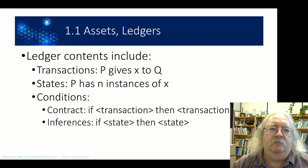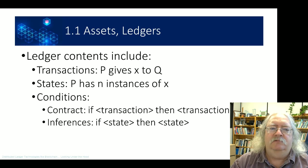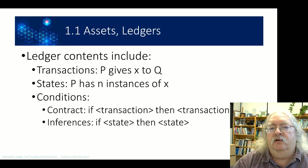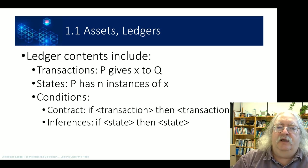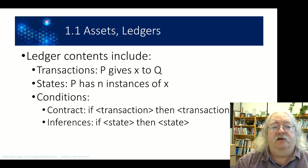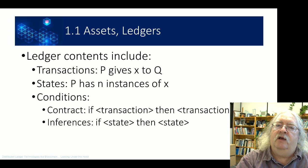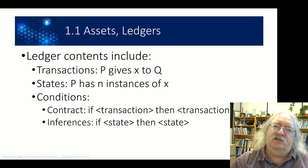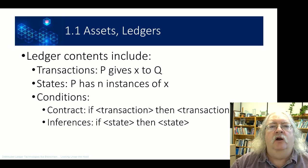Let's look at some core concepts. One core concept is the idea of assets and ledgers — essentially just terminology for data. Ledger contents can include transactions like 'P gives X to Q,' or states like 'P has N instances of X,' or 'A is a B.' Even more interestingly, conditionals — for example, in a contract, if one transaction takes place, then execute the other. Or inferences: if one state is the case, then another state must be the case. These are building blocks for larger kinds of applications.